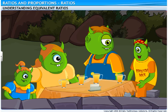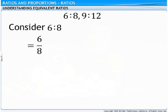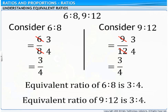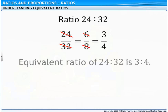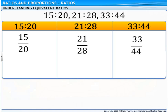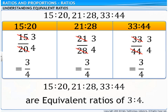Dad, how can you be so sure that these are equivalent ratios? Let's check. On converting the ratios into fractions and simplifying, we get 3 upon 4. Dad, 24 is to 32 will also result in the ratio 3 is to 4. Clever girl! Take a look at these ratios. On writing these ratios as fractions and simplifying, we get 3 upon 4 or 3 is to 4. So, 15 is to 20, 21 is to 28, and 33 is to 44 are equivalent ratios of 3 is to 4.